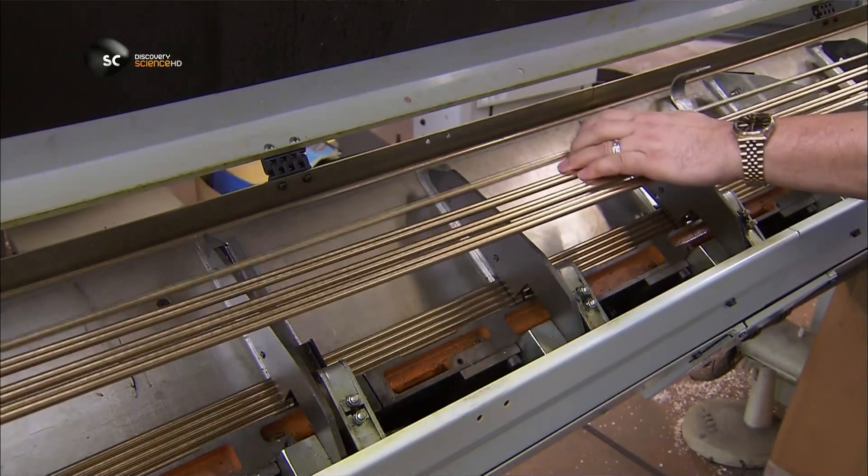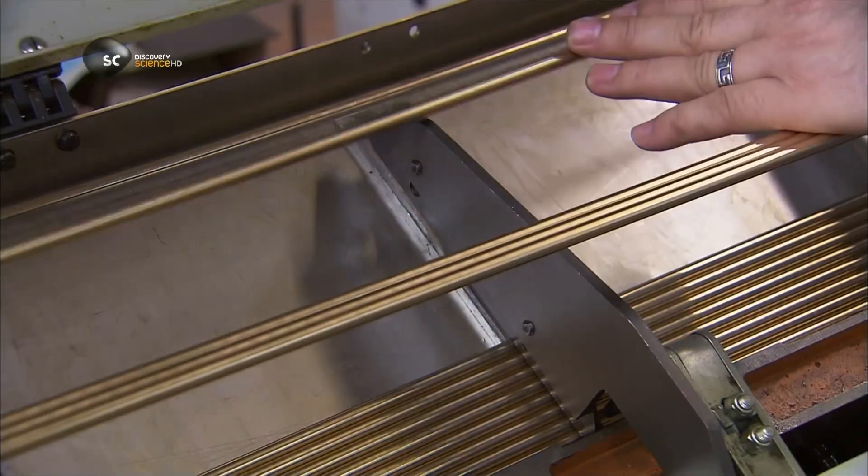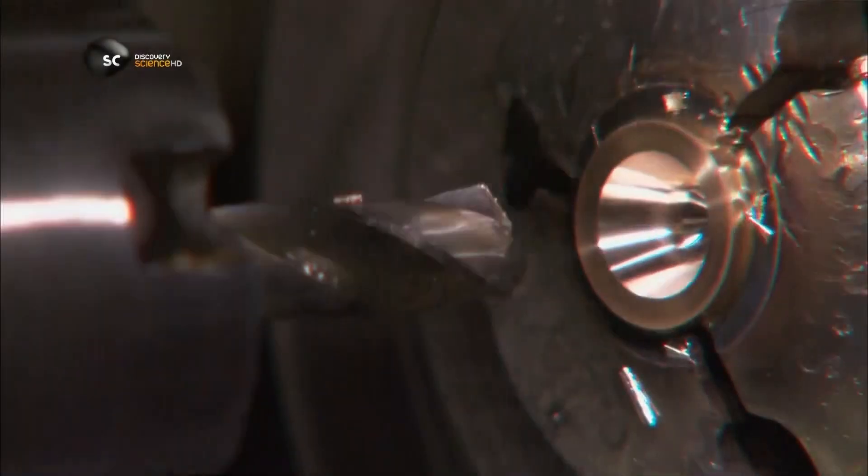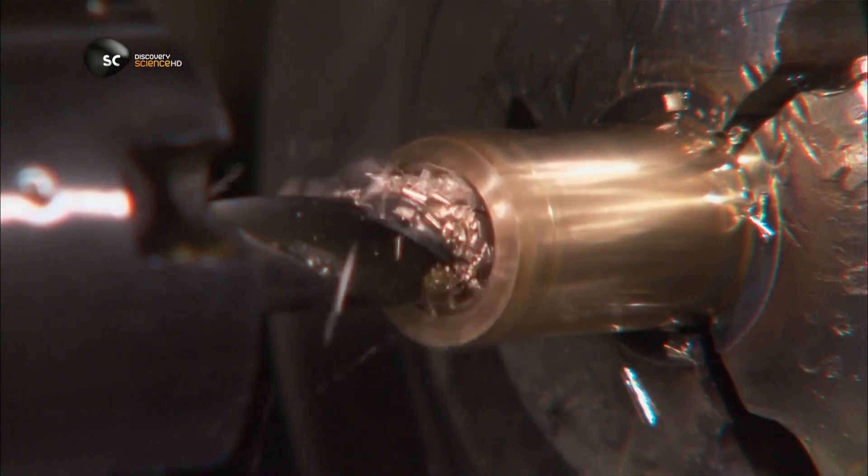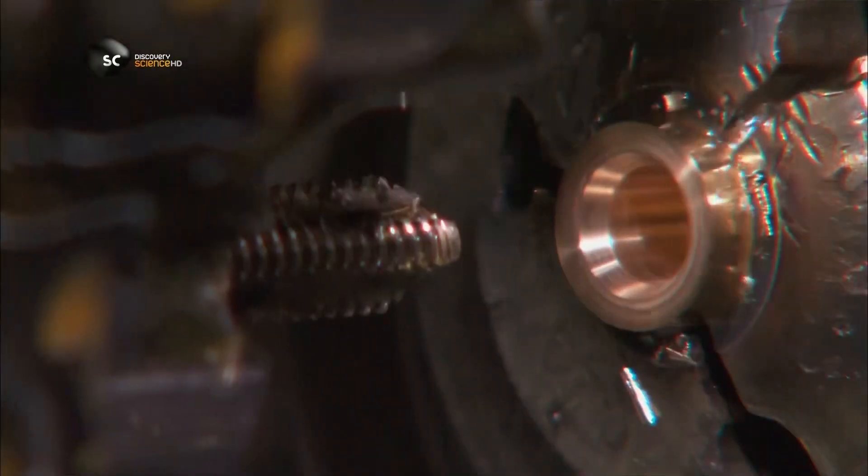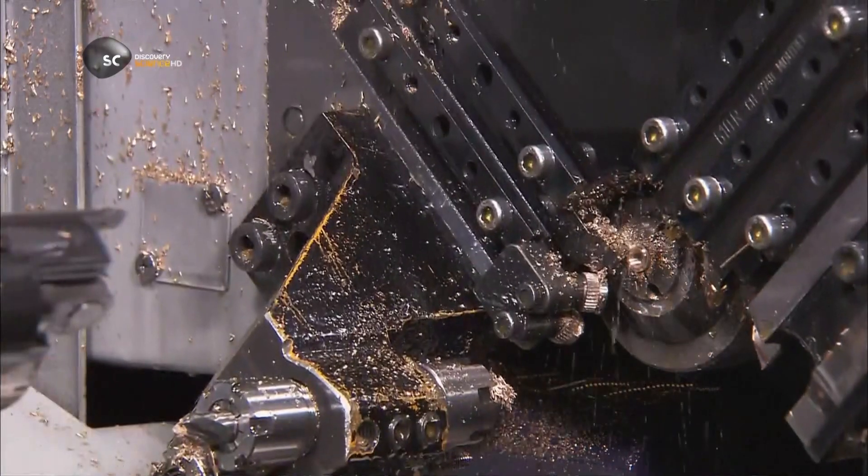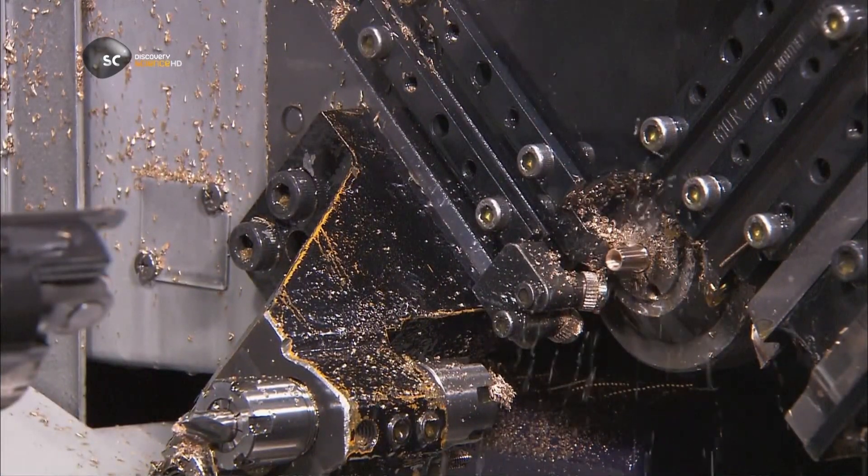Next, they load brass rods into a similar machine. Its tooling carves the brass rods into barrels. That's the main part of the dart that you grip. They thread and taper one end to allow the shaft to be screwed onto it. The tapering also makes the dart aerodynamic.